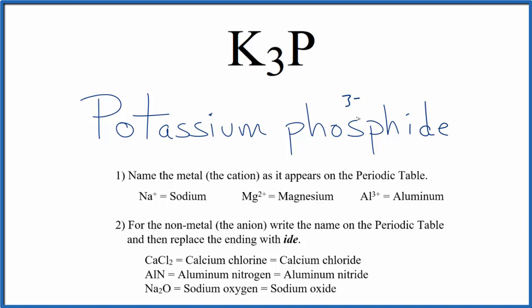It's in group 15, sometimes called 5A. Potassium is in group 1, so it'd be 1 plus. You're going to need 3 times 1 plus to give you 3 plus to balance out the 3 minus. So that's why we have K3P as the formula for potassium phosphide.